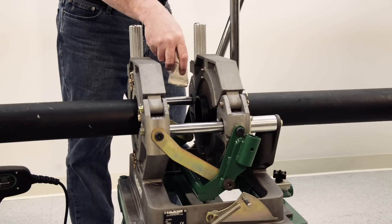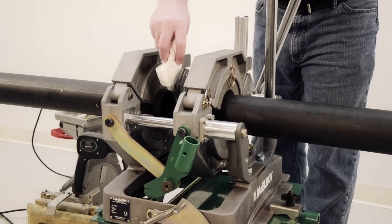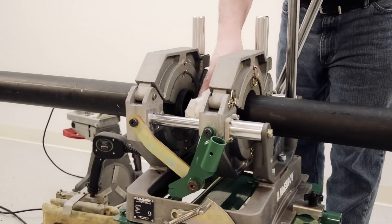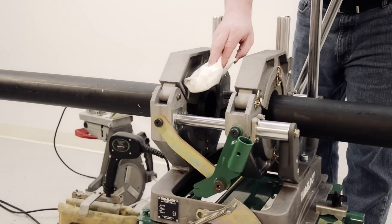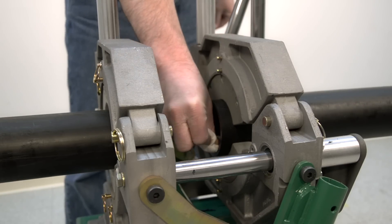It is just about time to heat our pipe, but before we can do that, we must make sure that our fusion area is clean. Wipe away any debris from the jaws and pipe using the same type of towel as before. Be sure not to touch the face of the pipe, as it is freshly faced and as clean as it can be.